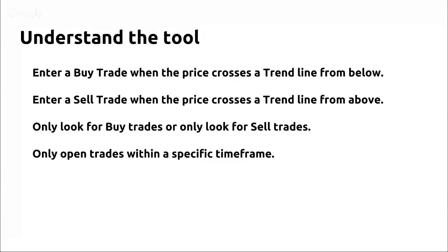If the trend line is here and the price crosses at this point, we're going to look for the open of this bar. As soon as it crosses, we can say the open of that bar was below the trend line, and the high of the bar was above the trend line — and because of that, we're going to enter a buy trade.